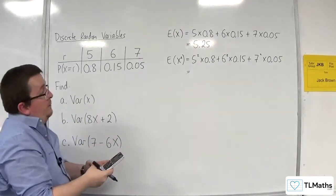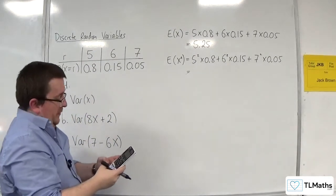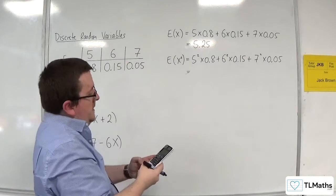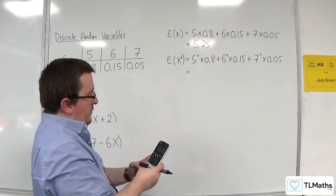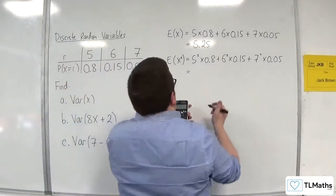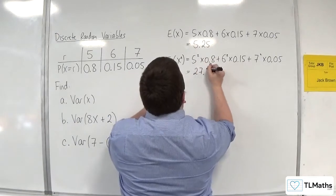So 25 times 0.8 plus 36 times 0.15 plus 49 times 0.05, and we get 27.85.